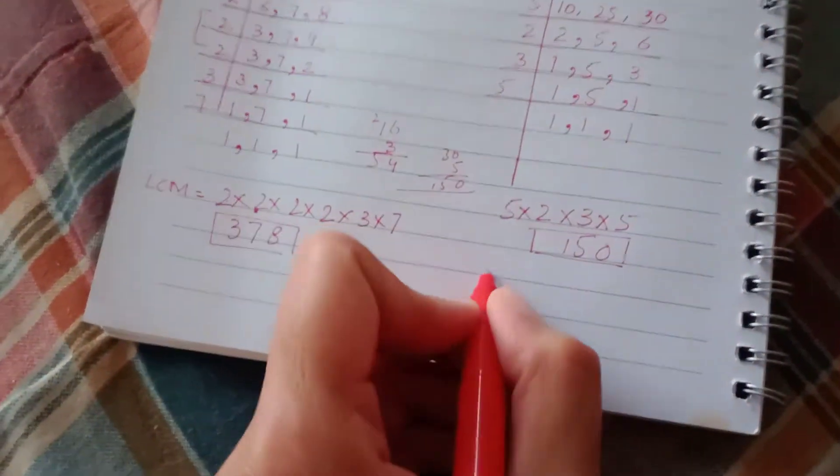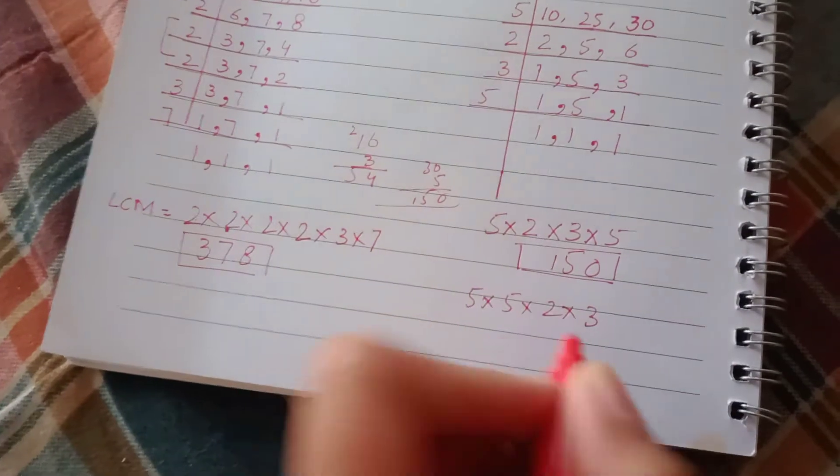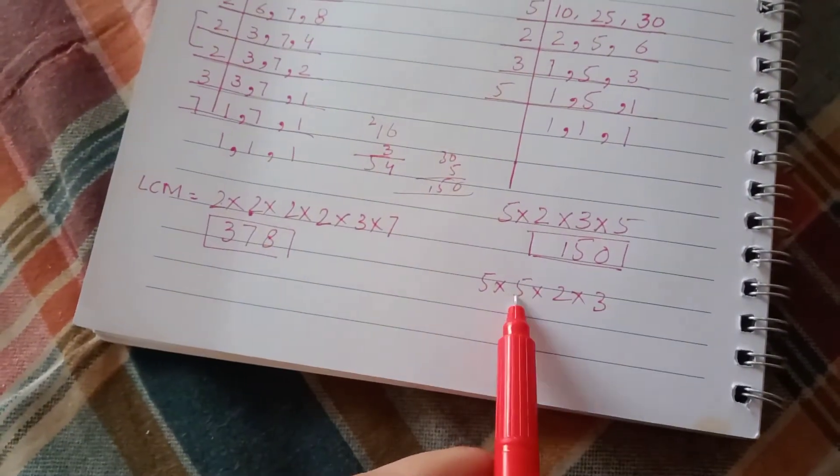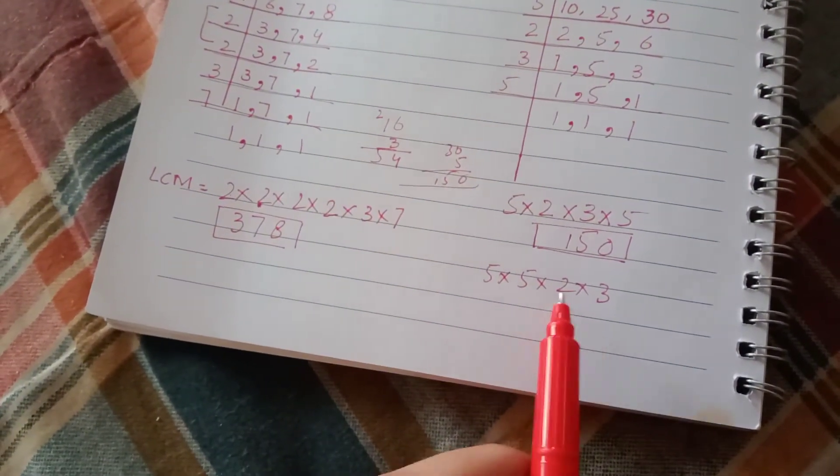If you have 5 multiply by 5 multiply by 2 multiply by 3, then 5 times 5 is 25, 25 times 2 is 50, 50 times 3 is again 150.